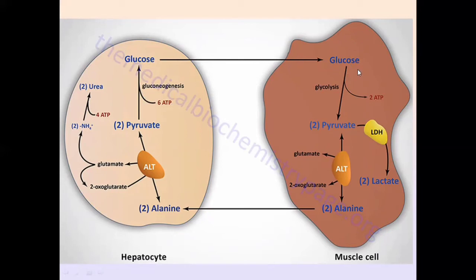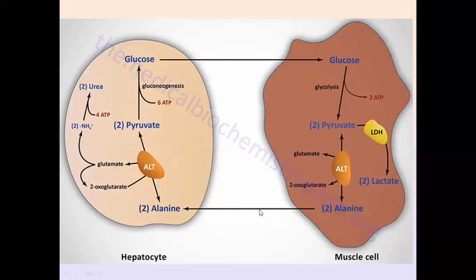In the muscles, the glucose undergoes oxidation. Under aerobic conditions, glucose is completely oxidized through aerobic glycolysis, producing pyruvate. In anaerobic glycolysis, pyruvate would be converted to lactate, but in the aerobic case, pyruvate is produced. This pyruvate is now available to accept another amino group from other amino acids that need to be transported to the liver. The pyruvate takes up another amino group, is converted into alanine, and alanine is released into the blood and taken up by the liver — and this cycle continues.